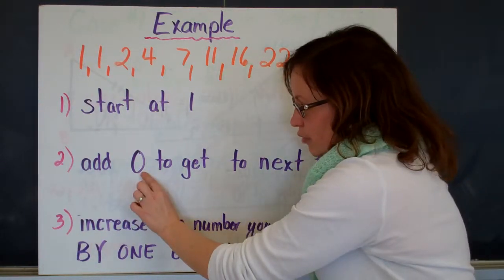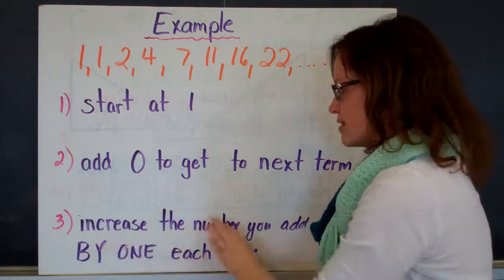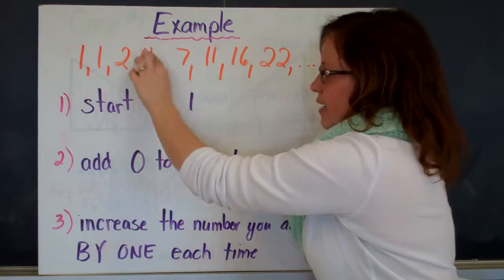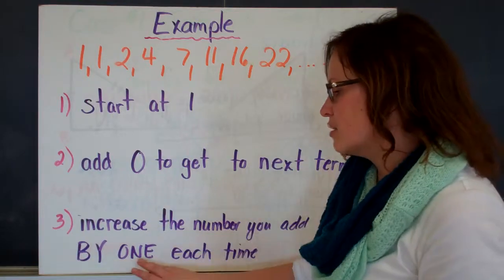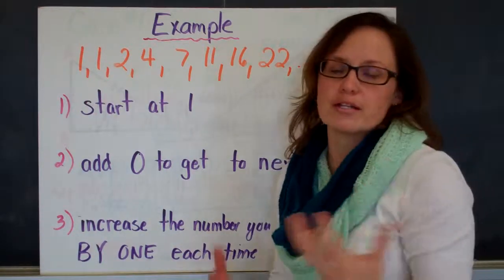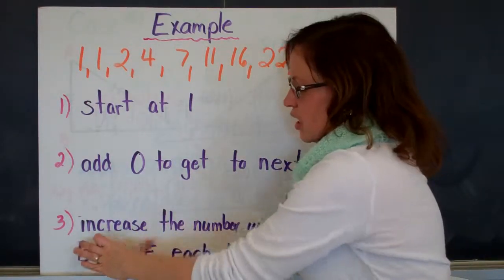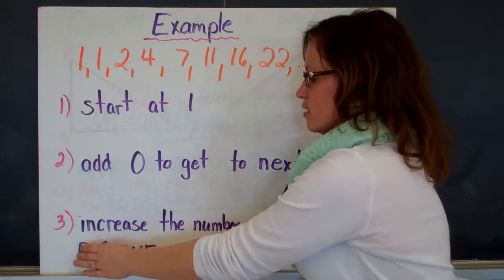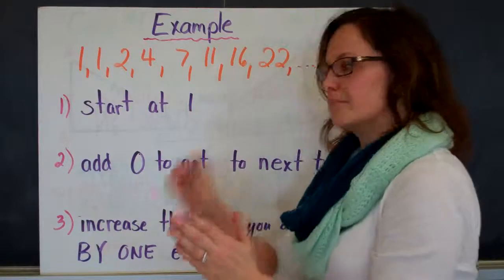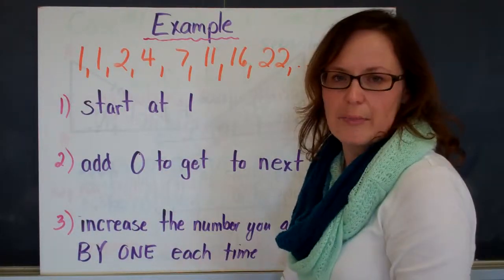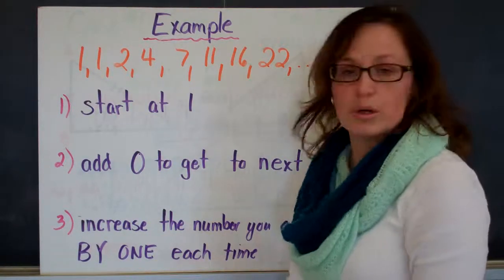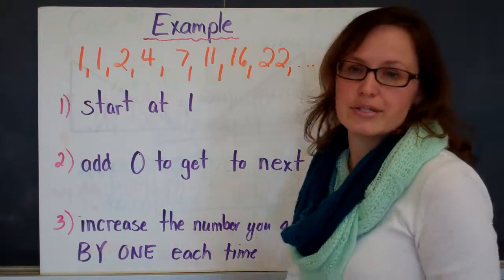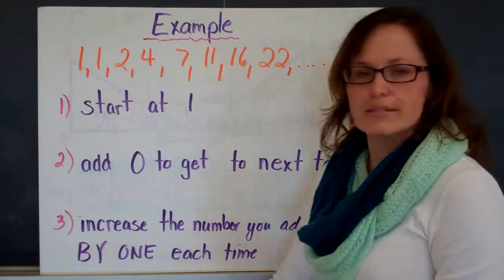So I added 0 the first time. I'm going to increase that by 1, so I add 1. I'm going to increase that by 1 again: I add 2, I add 3. I put this in capital letters here to focus on the most important detail — I want the person reading my description to really focus on increasing by 1. So that's how to describe number patterns or sequences using words or tables.